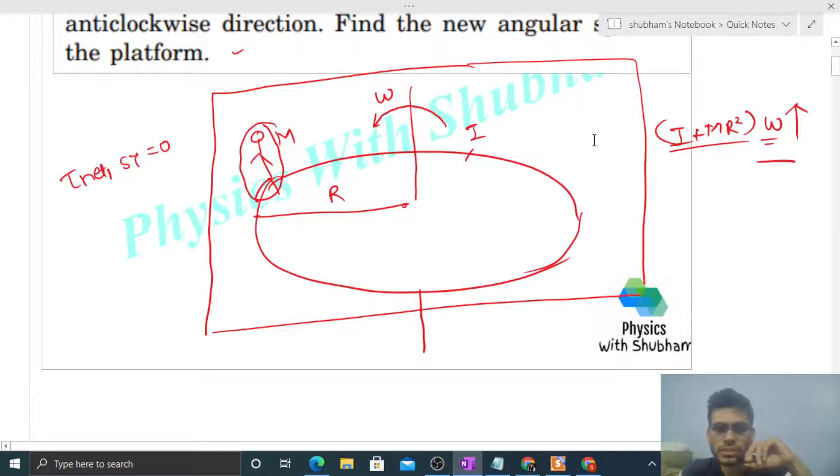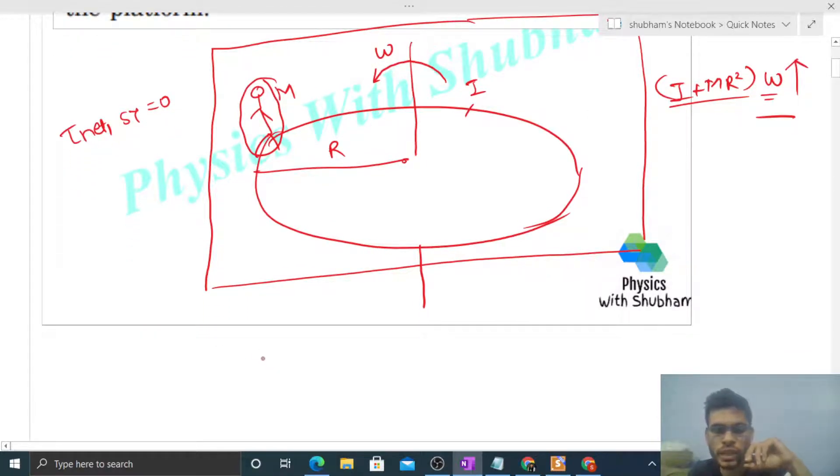Now what happens when the kid starts walking? Its relative velocity is with respect to the platform. First, let's assume the kid's linear velocity with respect to the ground is v1. That will be something like this - the radius is R and this angle is 90 degrees. v1 is the linear velocity of this kid with respect to the ground.